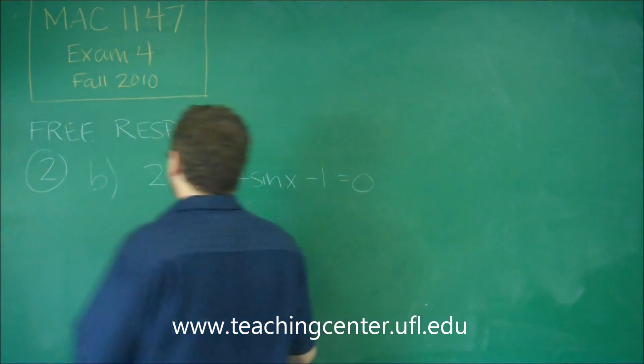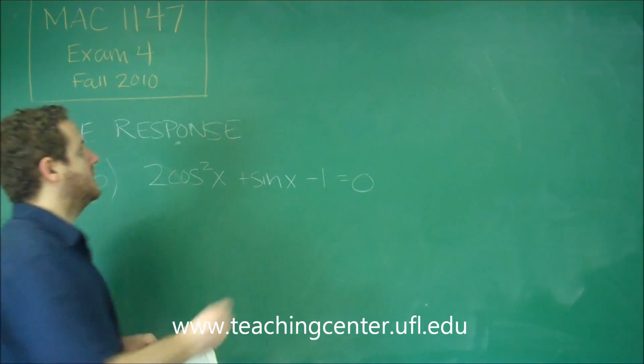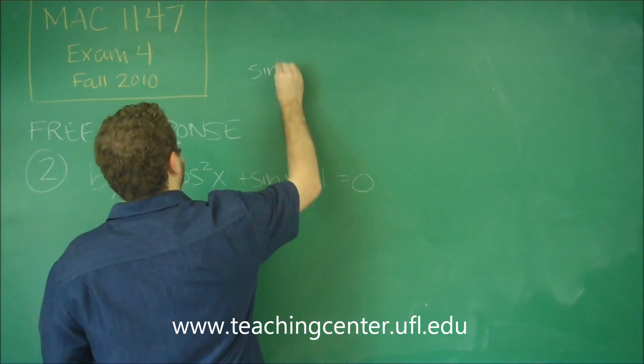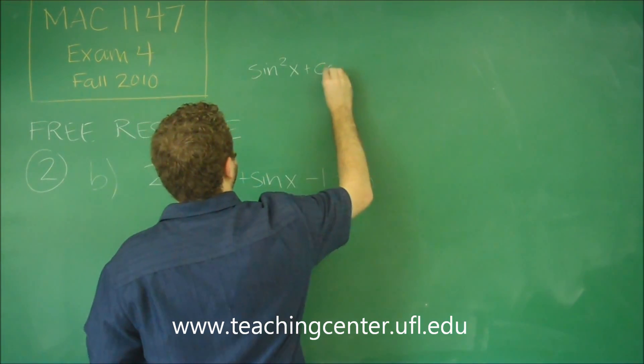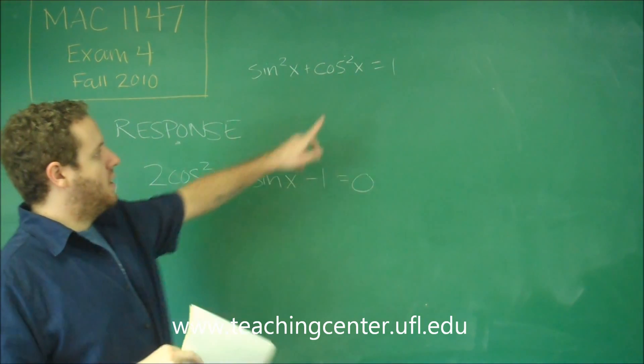The easiest way to do that here is since we have cosine squared, if you use your Pythagorean trig identity, sine squared x plus cosine squared x equals 1. If you solve for cosine squared x, you can see that cosine squared is 1 minus sine squared.